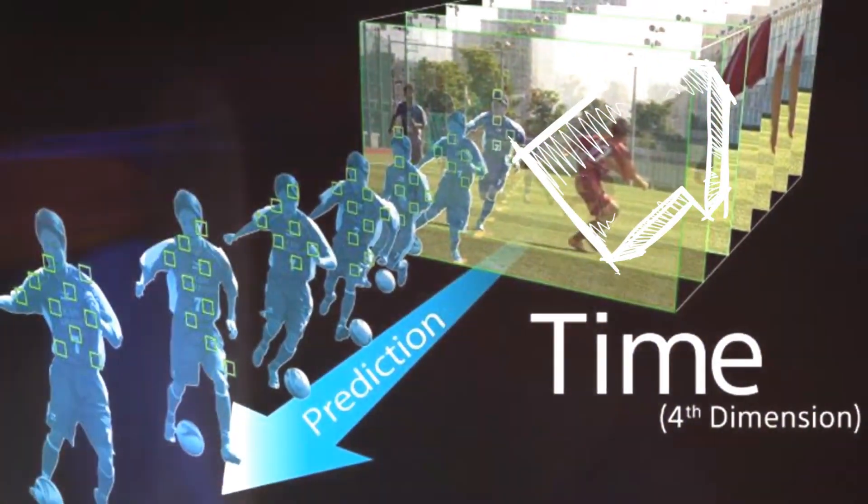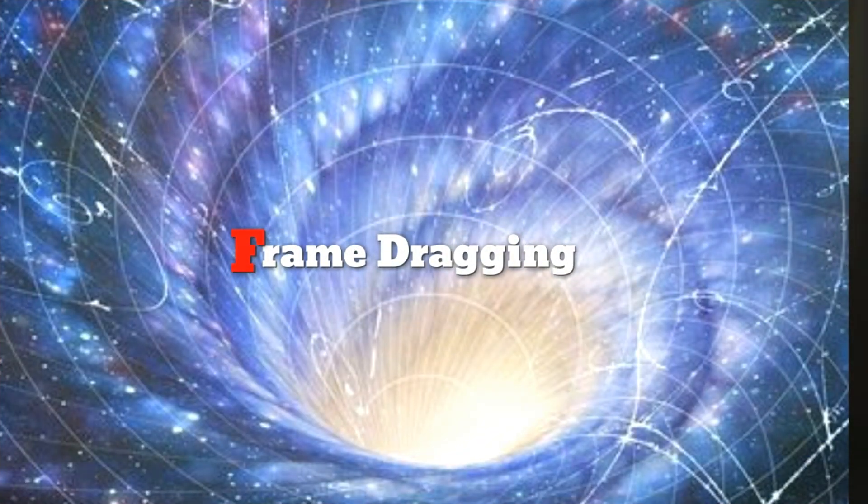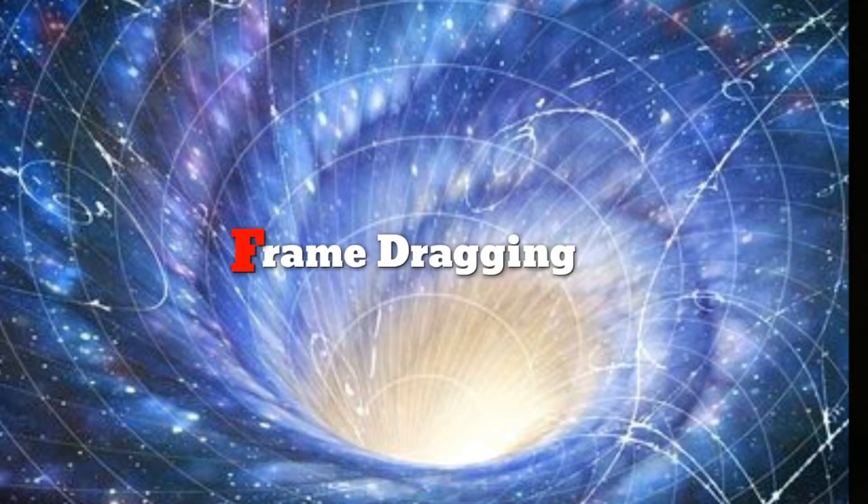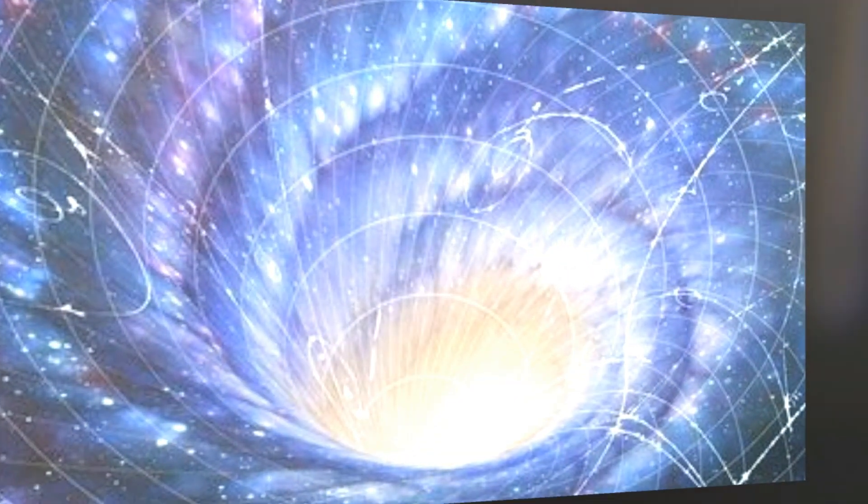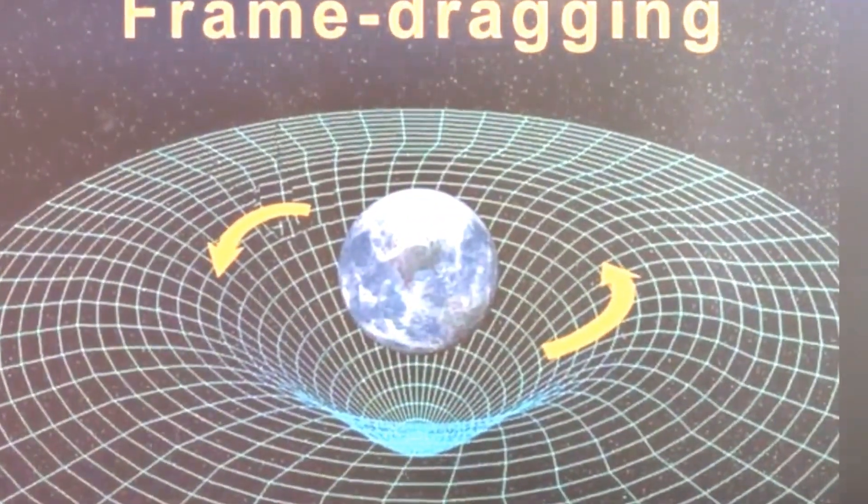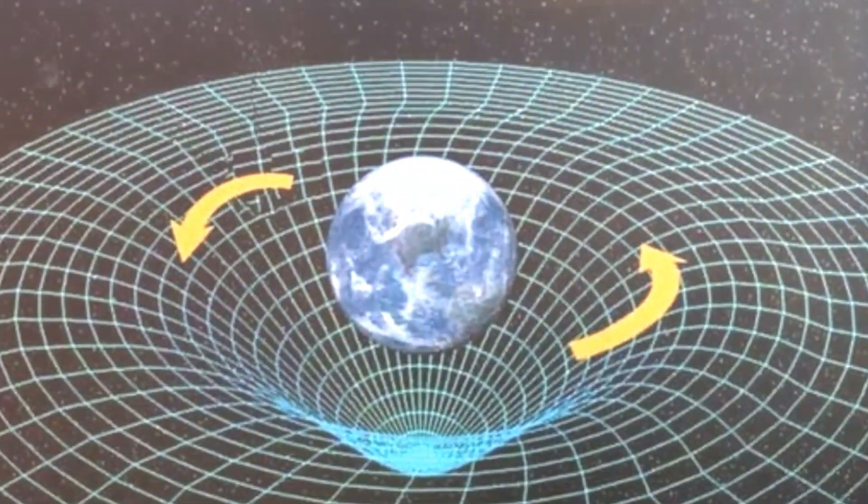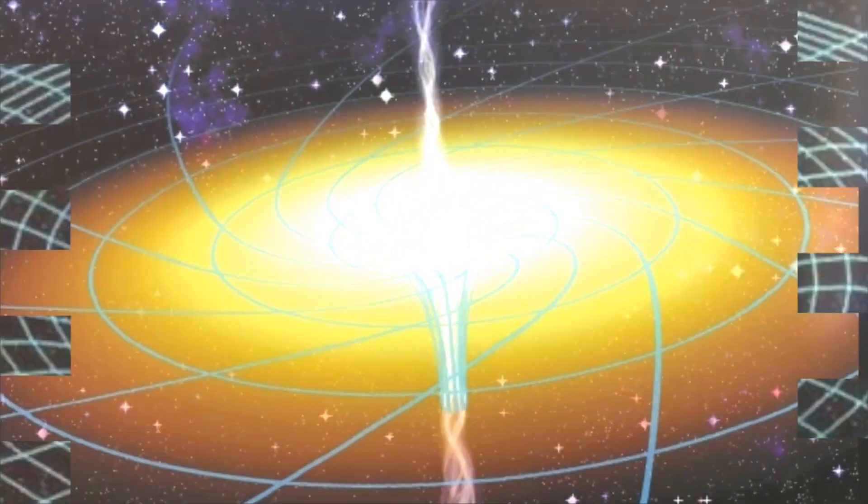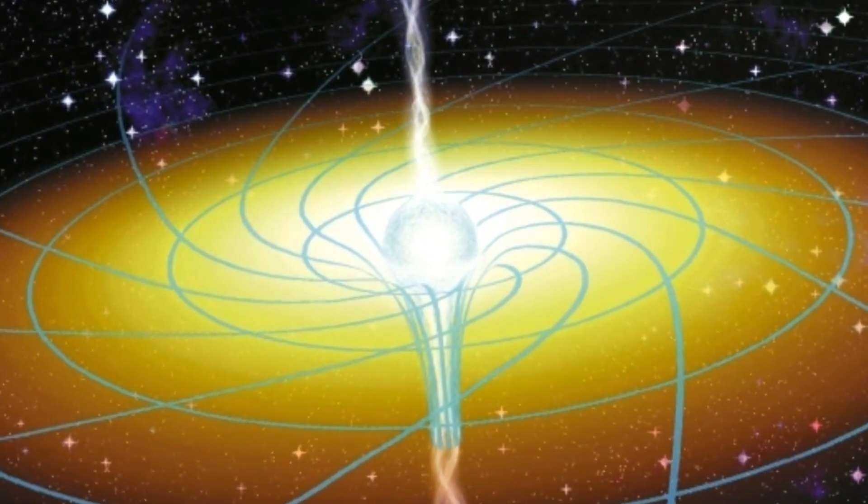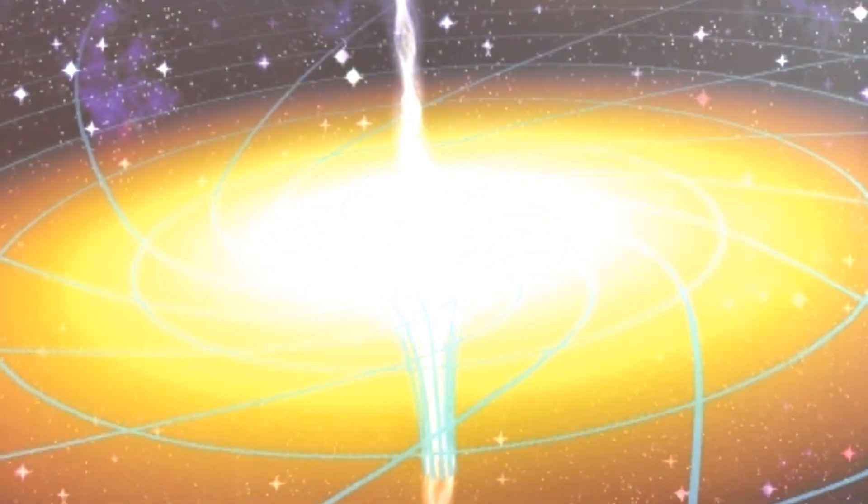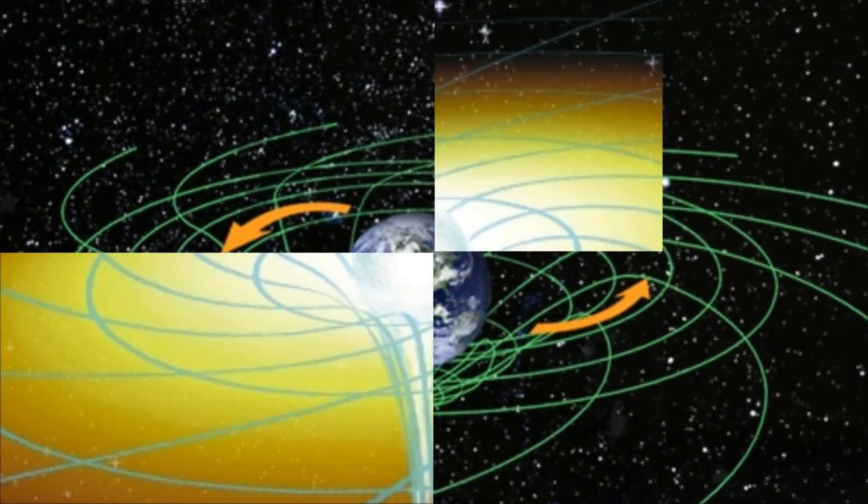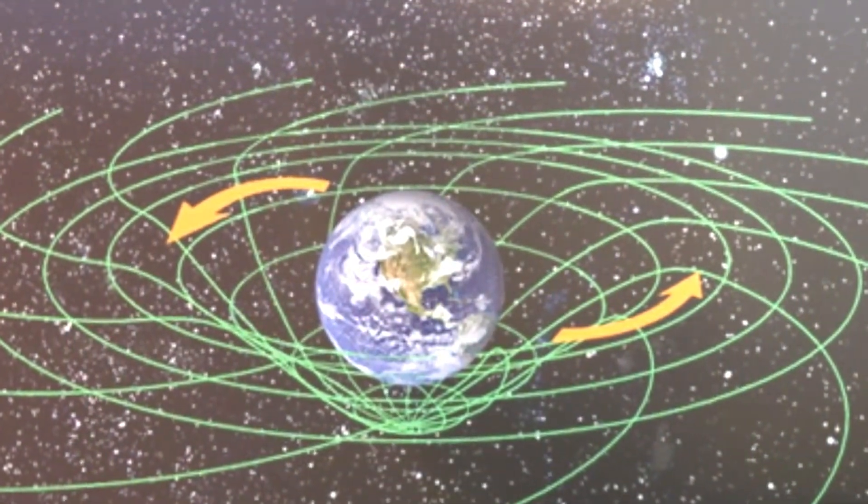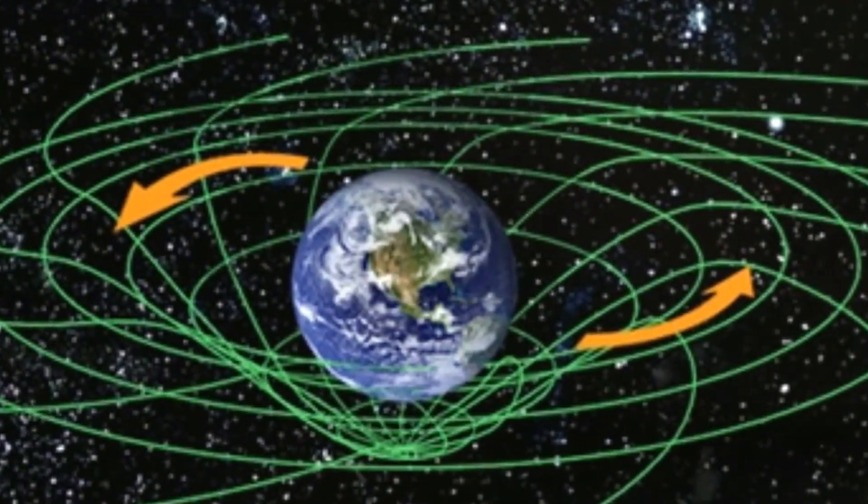Number five: Frame dragging. Frame dragging is an effect on space-time predicted by Einstein's general theory of relativity which is due to non-static distribution of mass energy. The rotation of a massive object would distort the space-time matrix and thus make the orbit of the nearby particle change its orientation of its rotational axis. Simply, we can understand that the light traveling in the direction of the rotation of the object will move past the object faster than the light which will be moving against its rotation.